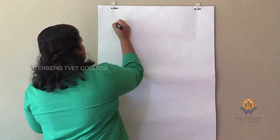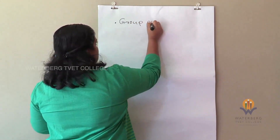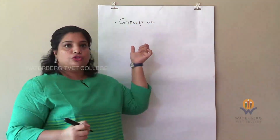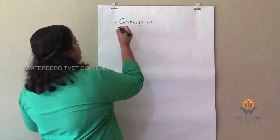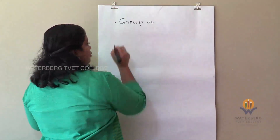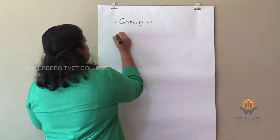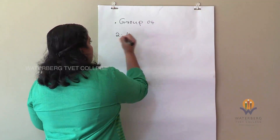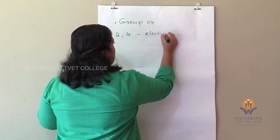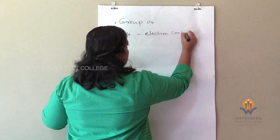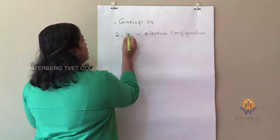First of all, carbon is in group 4. Carbon belongs to group 4 of the periodic table. The atomic number of carbon is 6. Therefore we can write the electron configuration of carbon as 2,4. Now if we know that carbon's electron configuration is 2,4, we know that this is the core electron and this is the valence electron.